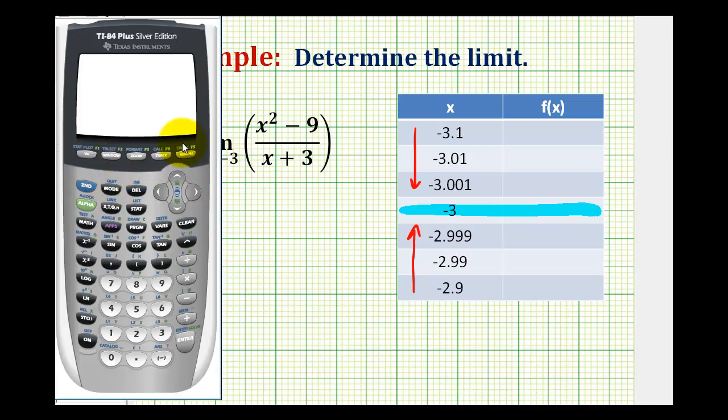The first step is to type in our function, so we'll press y equals. Our numerator is x squared minus nine, and our denominator is x plus three.